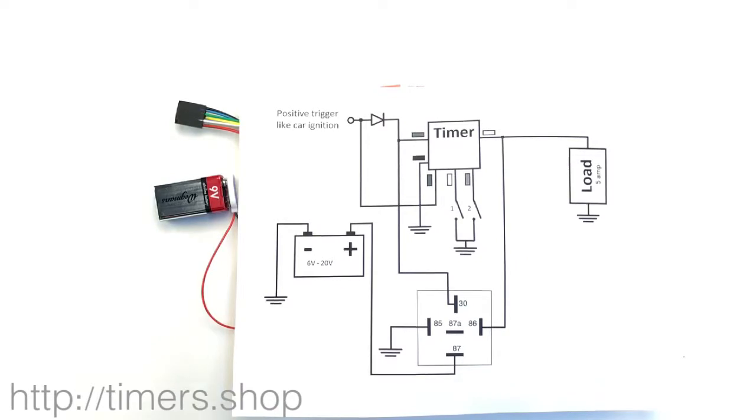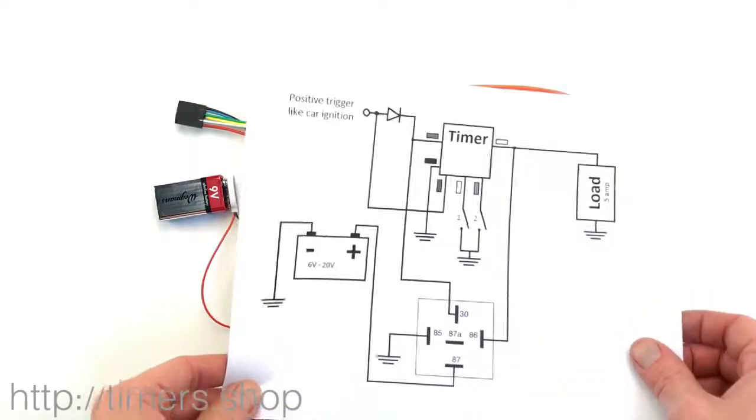In this video I would like to show you another self-latching circuit. It will be triggered by an external source like an ignition wire in a car. In this case we're using the trigger wire so we want to keep our load running for a period of time after we turn the car off.